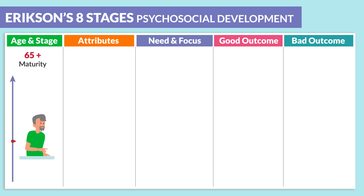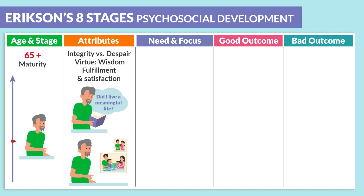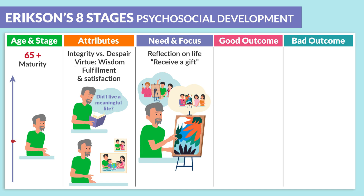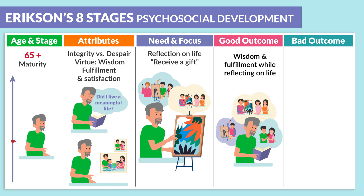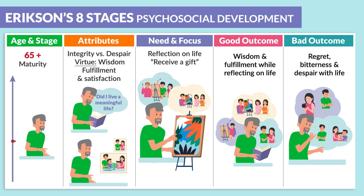Lastly, 65 and older is considered maturity. The attributes are integrity versus despair. The virtue is wisdom with fulfillment and satisfaction. The need and focus is reflection on life — they basically feel like they received a gift. The good outcome is wisdom and fulfillment while reflecting on life. The bad outcome is regret, bitterness, and despair with life.